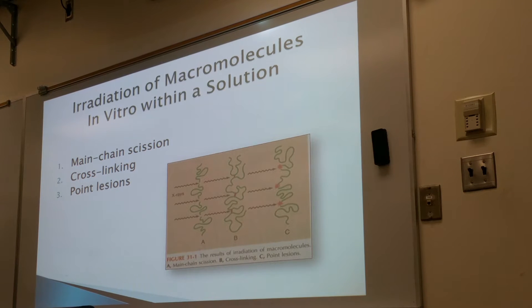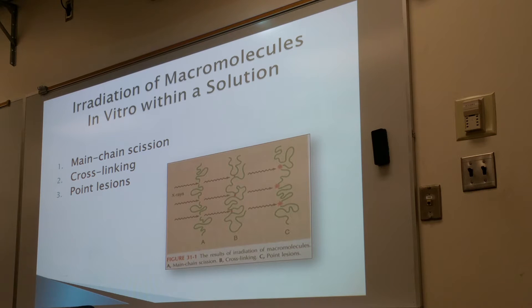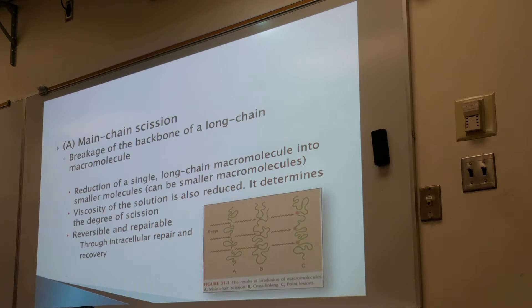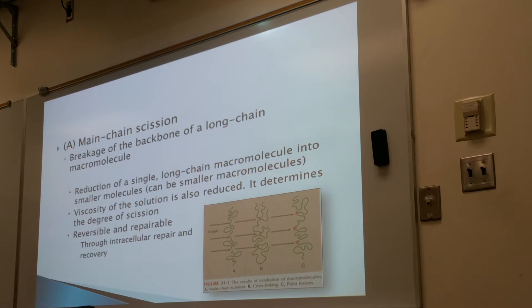The radiation of macromolecules in vitro within the solution — three things can occur. You can have main chain scission, cross-linking, and point lesions, where we get actual damage to the DNA. Main chain scission is a breakage of the backbone of the long chain macromolecule — it's essentially a reduction of a long single chain into smaller molecules or smaller macromolecules.